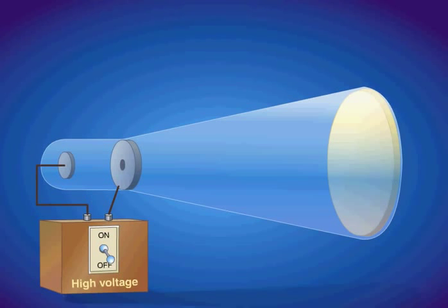A cathode ray tube is the forerunner of the television tube. It is a glass tube from which most of the air has been evacuated.